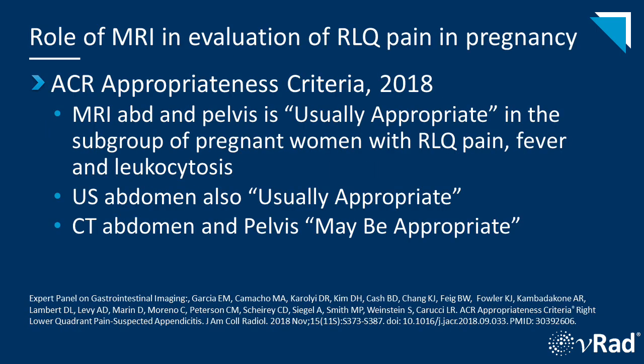The workup of clinically suspected appendicitis in the emergent setting will vary depending on the tools and modalities available at that time and in that particular facility. MRI abdomen and pelvis is designated as usually appropriate in the subgroup of pregnant women with right lower quadrant pain, fever, and leukocytosis by the ACR appropriateness criteria. Ultrasound is also in the usually appropriate category and in my experience is typically performed first, as it's generally more readily available in the vast majority of emergency departments, and has at least a chance of finding the appendix or some other etiology for the patient's symptoms.